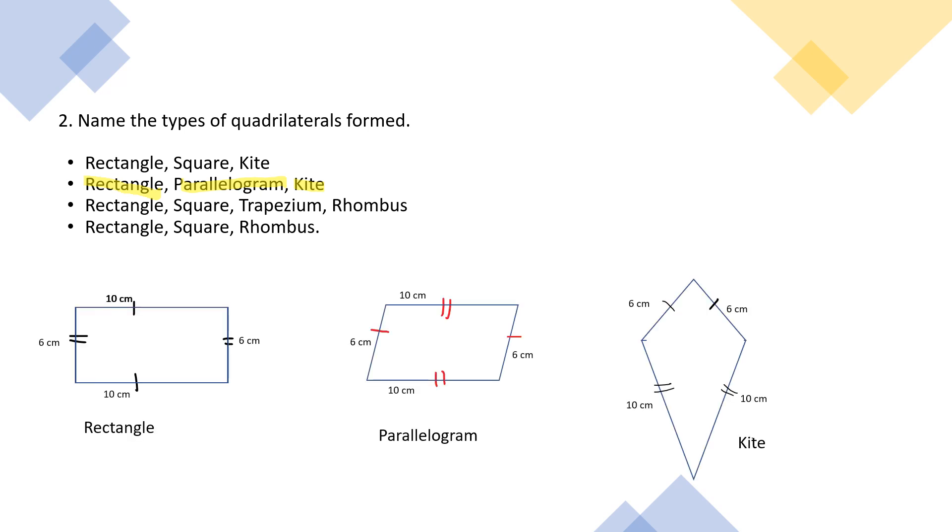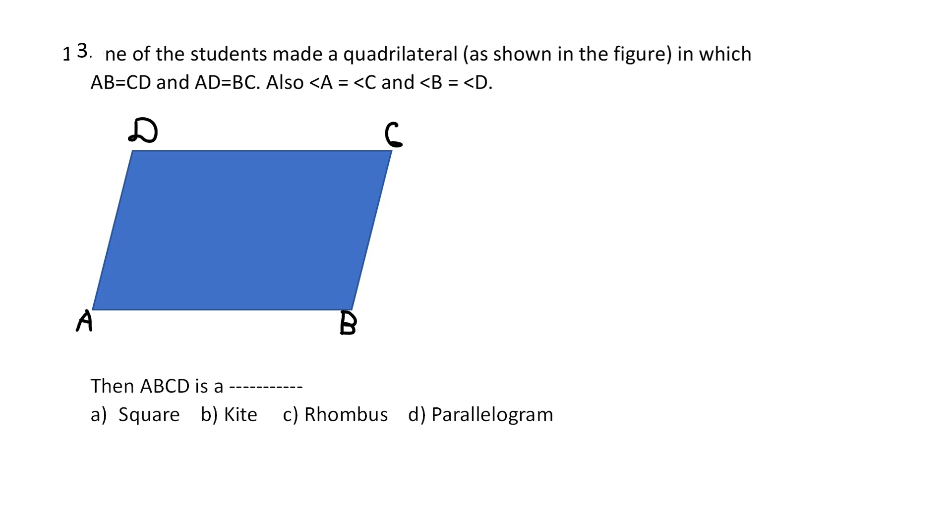Let's move to the third question. One of the students made a quadrilateral as shown in the figure, in which AB equals CD and AD equals BC. Also angle A equals angle C, and angle B equals angle D. Then ABCD is a square, kite, rhombus, or parallelogram.